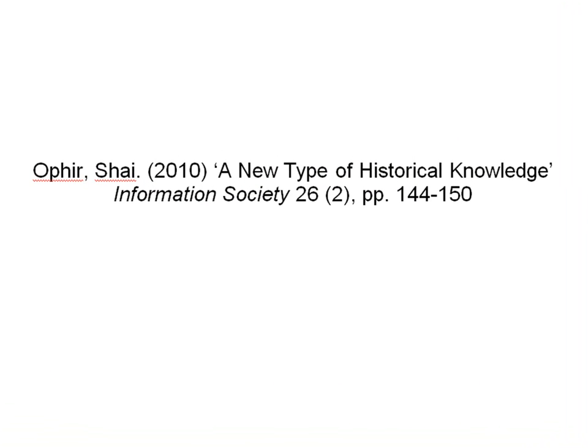Let's use the following article as an example. This is an article called A New Type of Historical Knowledge, from Volume 26, Issue 2 of the journal Information Society, published in 2010. Firstly, you need to know the name of the journal in which the article appears.